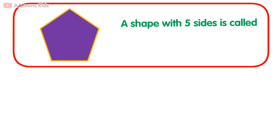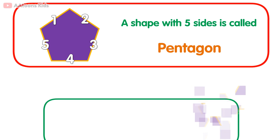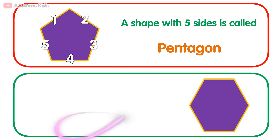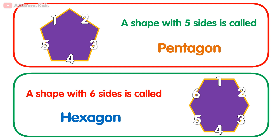A shape with five sides is called a pentagon: one, two, three, four, five. A shape with six sides is called a hexagon: one, two, three, four, five, six.